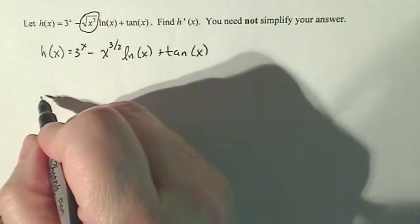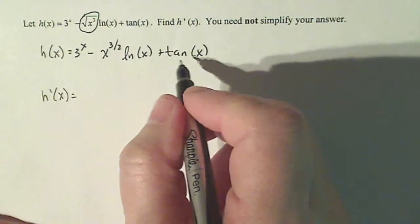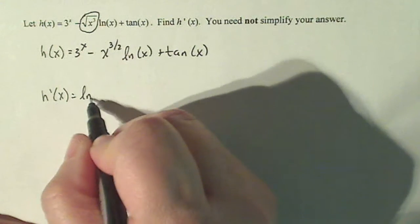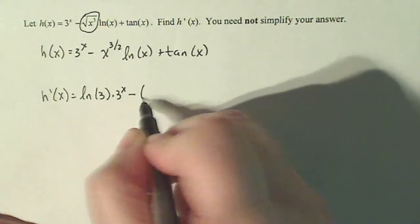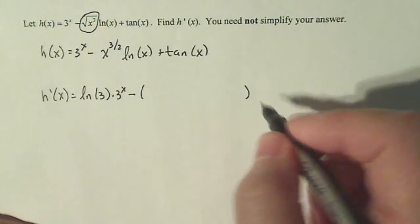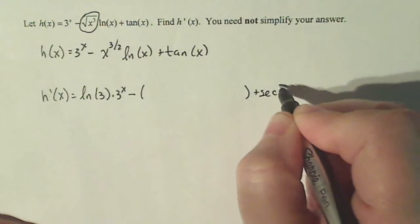Okay, now I'm gonna write h prime of x because I'm starting the process of doing the derivative. Well, 3 to the x, that's just a rule: natural log of 3 times 3 to the x minus—and now I'm gonna put the information from the product rule in there in a second—but the derivative of tangent is secant squared x.